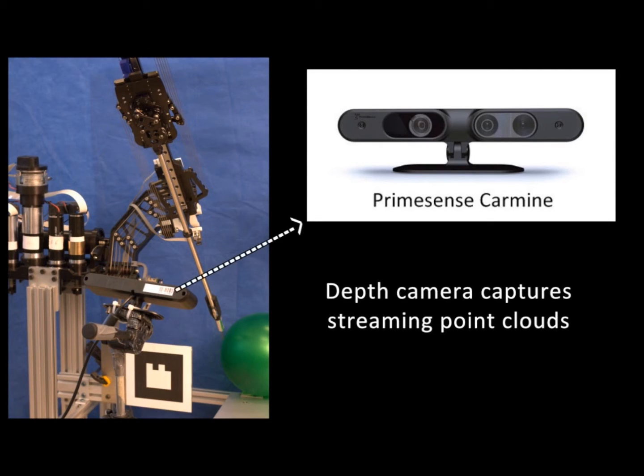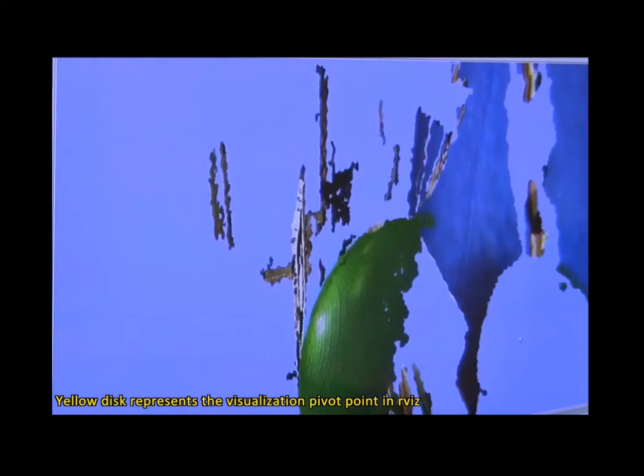Depth information is obtained from a PrimeSense camera. We see here the point cloud image of depth information. The yellow dot is a point of rotation.